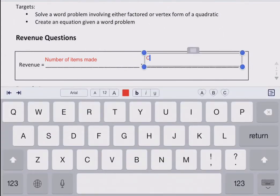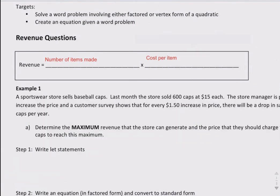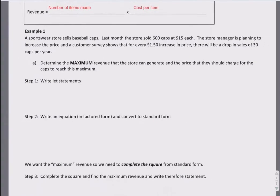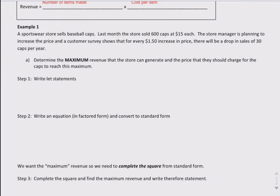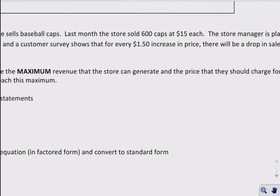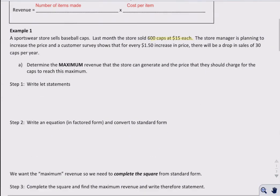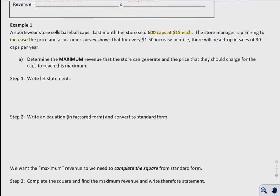over here, let's put it is the cost per item, or unit of labor, whatever it is we're talking about here. But let's stick with this for now, make it simple on us, and let's look at our first example. So we're looking at example number one. A sportswear store sells baseball caps, and they know that last month they sold 600 caps at $15 each. The store manager is planning to increase the price - so increase is a keyword there - and a customer survey shows that for every $1.50 increase, there will be a drop in sales of 30 caps per year.